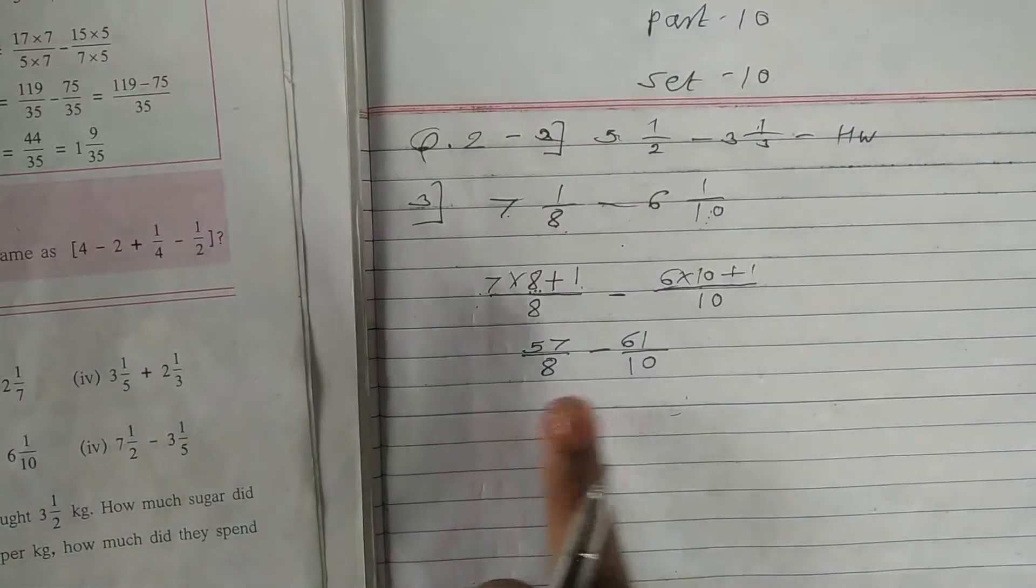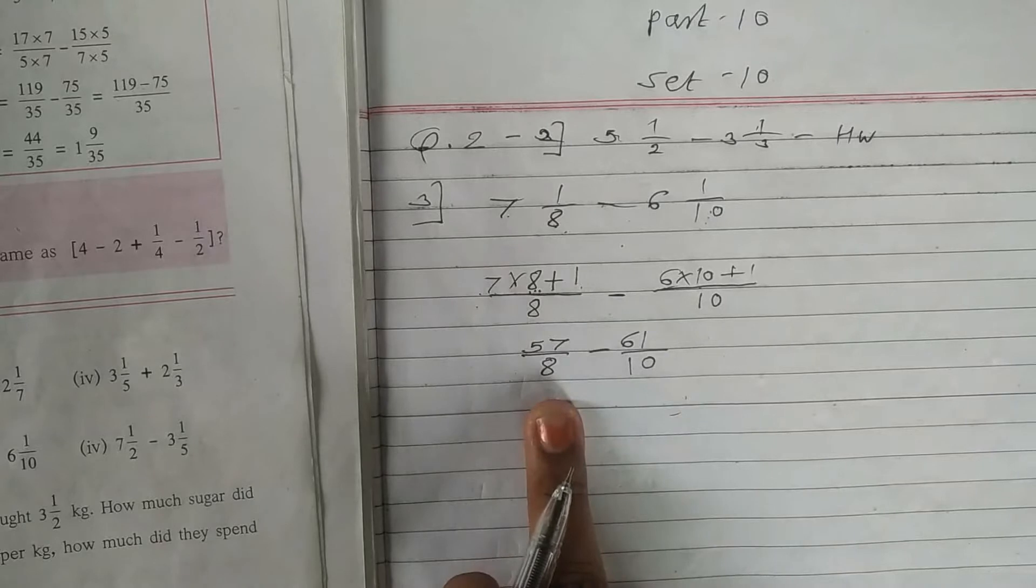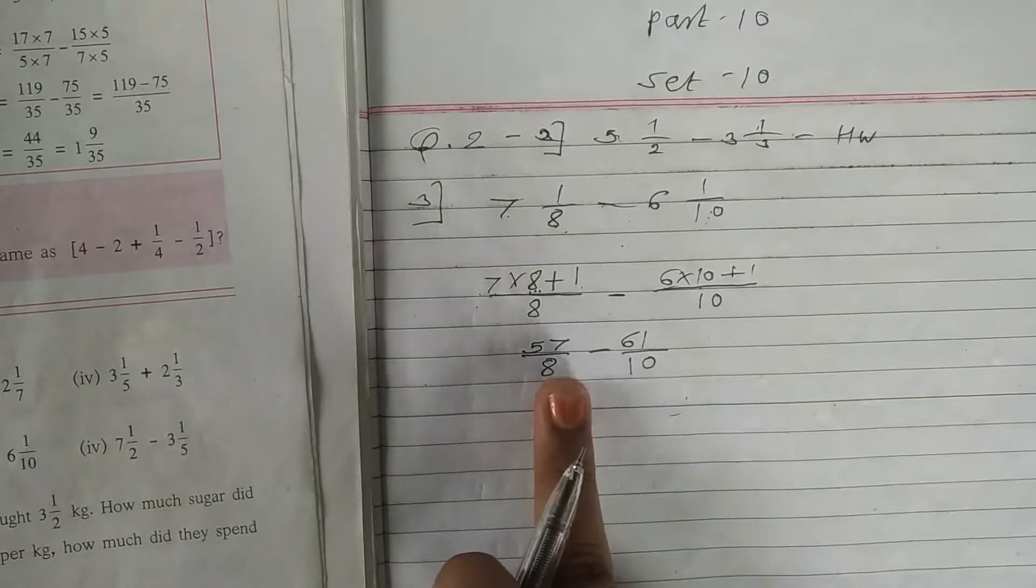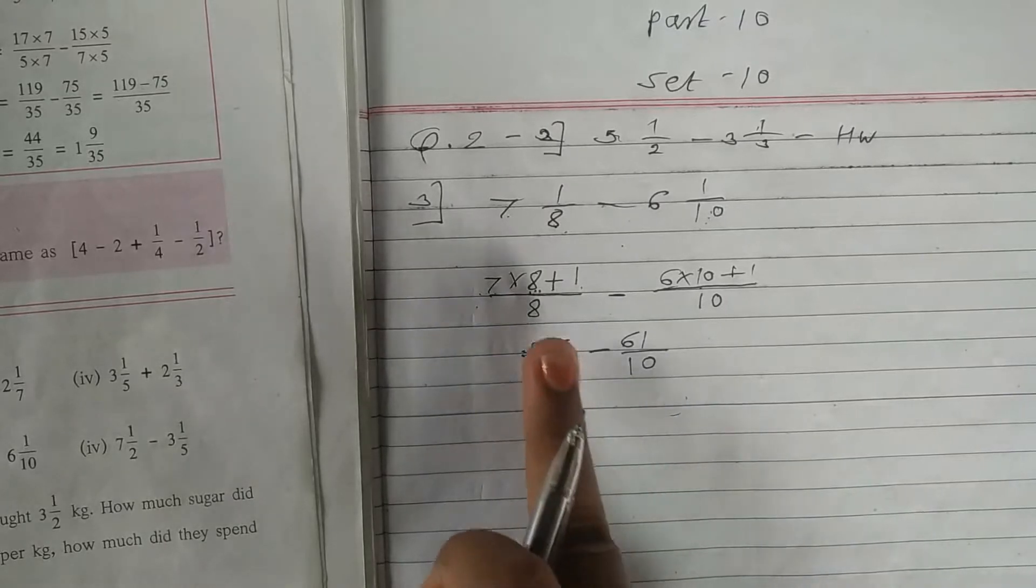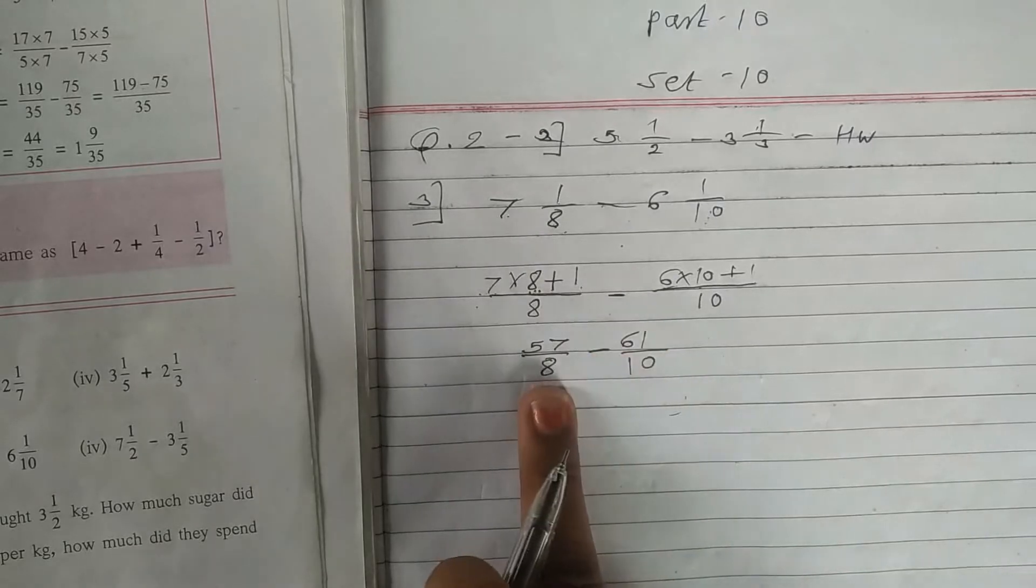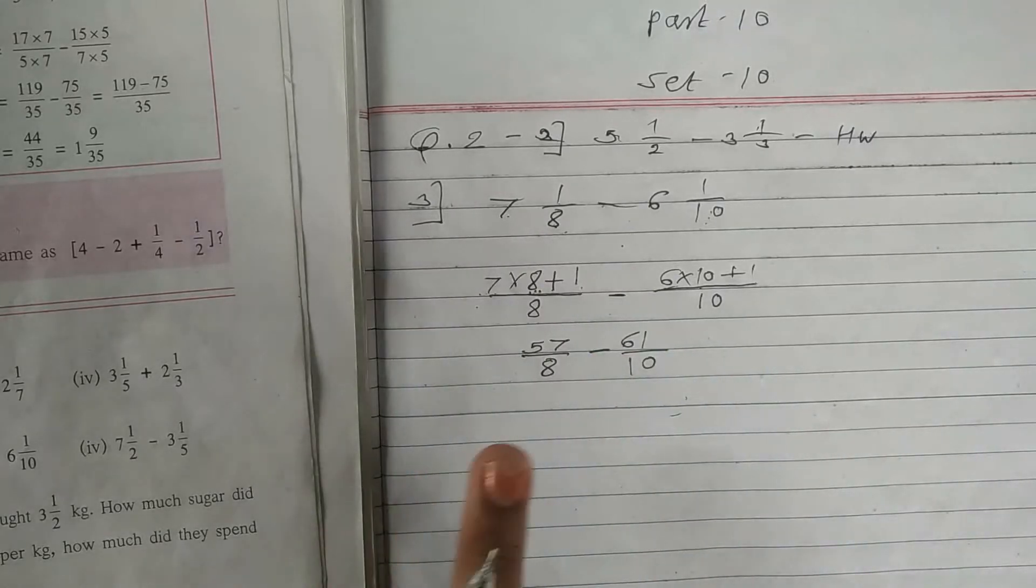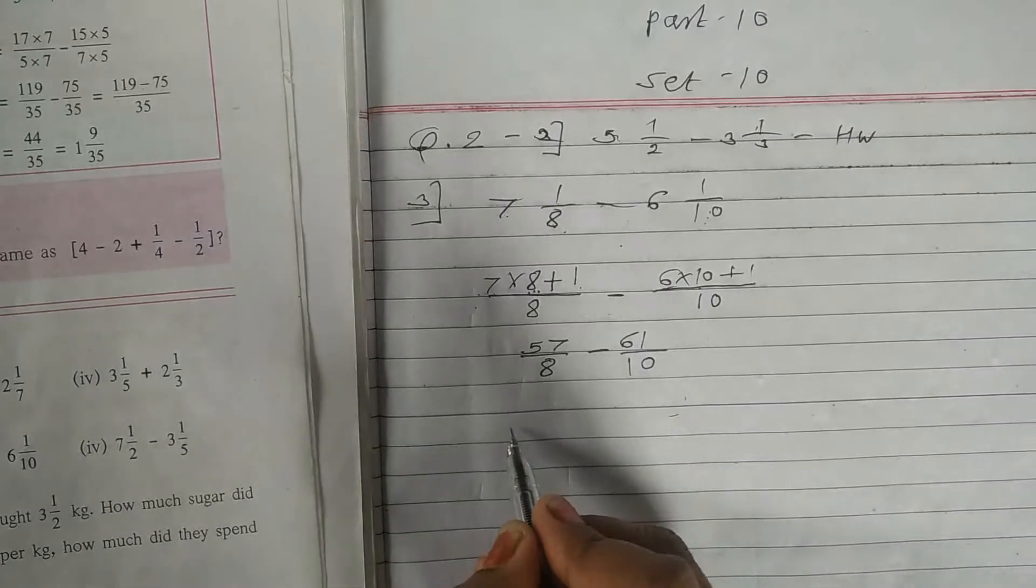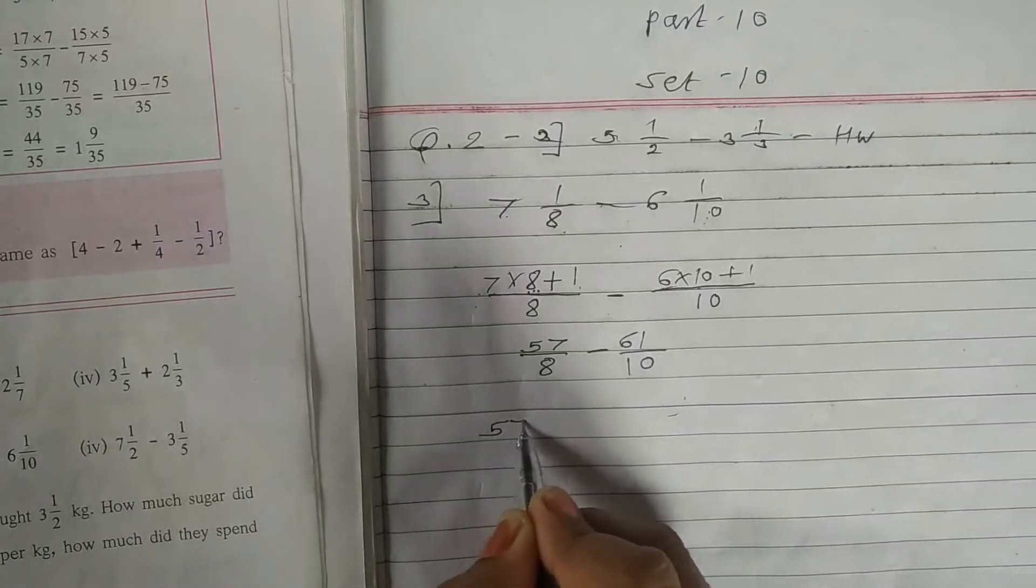Here base is not same. So we cannot do action. First we have to make the same by cross multiplication method. For that you have to do like this procedure.